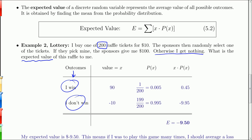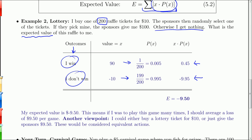To get the expected value, I take the sum of the x times p of x's. Here I'm going to take 90 times 0.005, and I get 0.45. I take negative 10 times 0.995, and that gives me negative 9.95. When I add these up, that's the summation part, I get negative 9.5. What that means is that if I played this raffle over and over, on average I would lose $9.50 per game. That doesn't mean I'll ever actually lose $9.50. I'll either make a profit of 90 or lose 10.